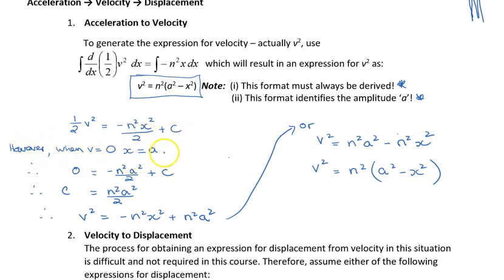We're going to use this understanding about simple harmonic motion: that when displacement is at its maximum, which we've called its amplitude a, then the velocity is zero. So substituting those values in, we'll get zero equals minus n squared a squared on two plus a constant. And you can see then that your constant is n squared a squared on two.